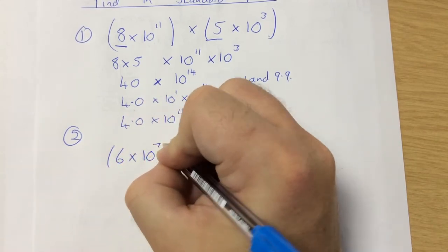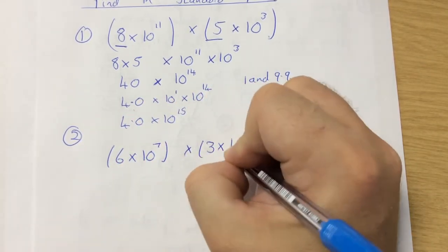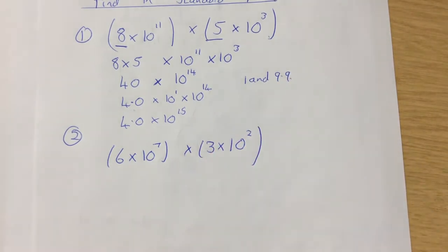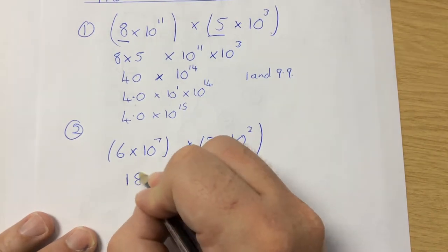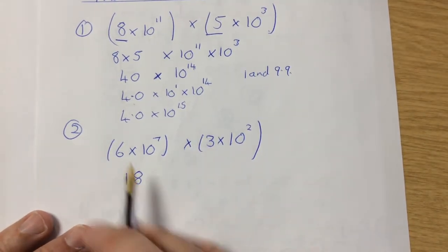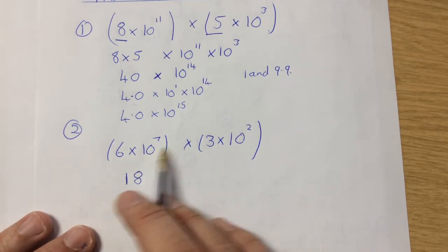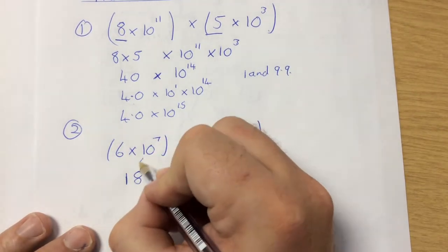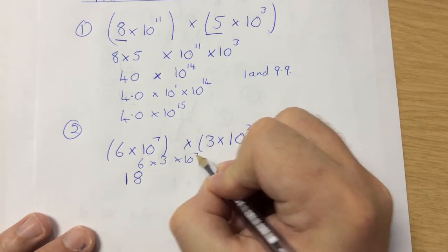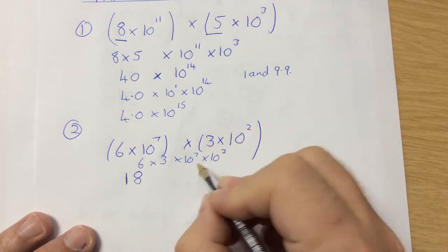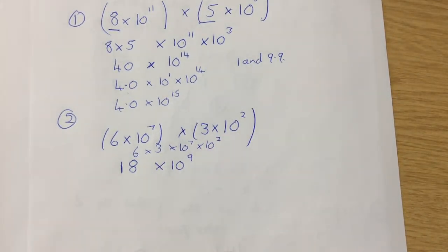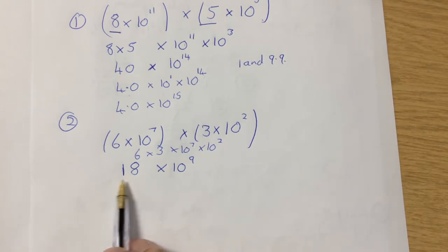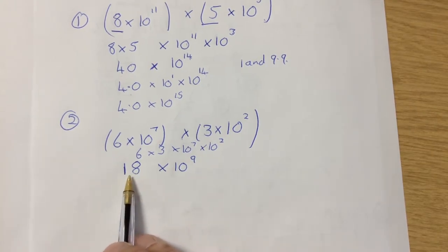So if I'm doing 6 times 10 to the 7 multiplied by 3 times 10 to the 2, I'd be doing 6 times 3 is 18. And then 10 to the 7 times 10 to the 2 — you add the powers, so it becomes 10 to the 9. But the problem is it's got to be between 1 and 9.9, and 18 is too big.